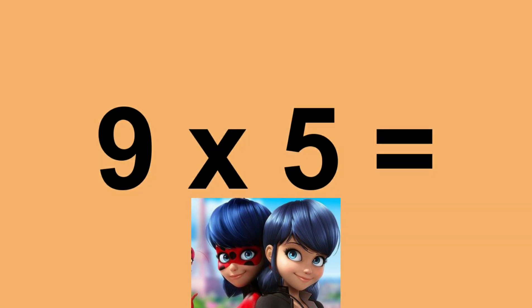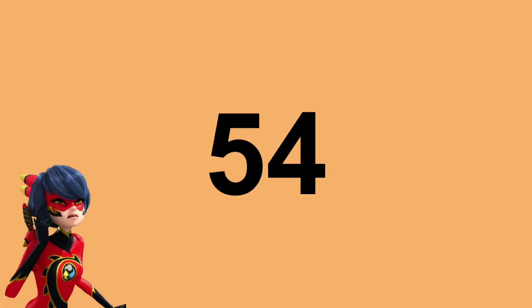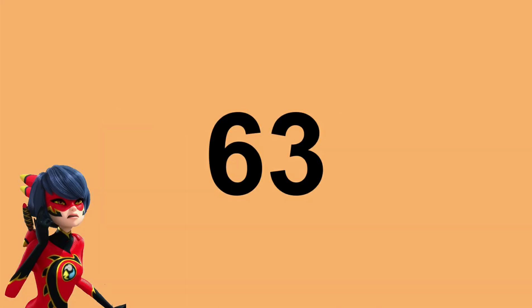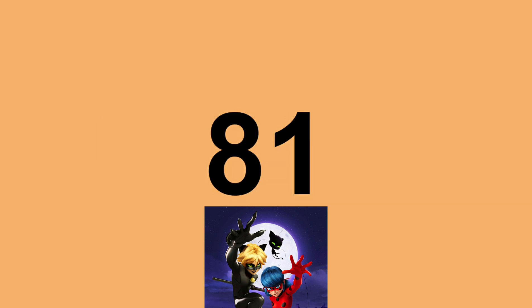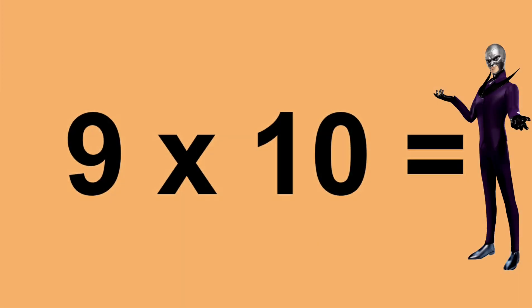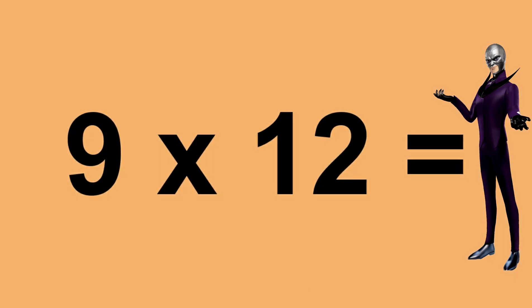Nine times five equals forty-five. Nine times six equals fifty-four. Nine times seven equals sixty-three. Nine times eight equals seventy-two. Nine times nine equals eighty-one. Nine times ten equals ninety. Nine times eleven equals ninety-nine. Nine times twelve equals one hundred and eight.